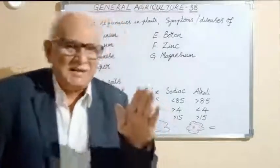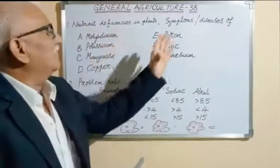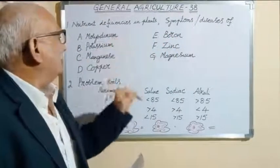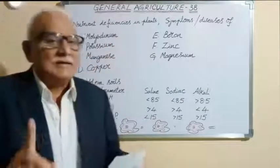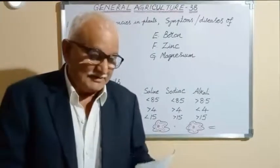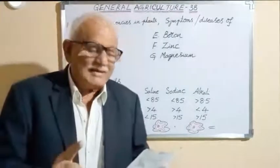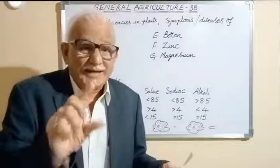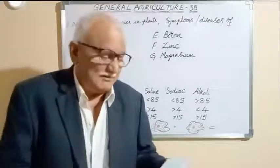These are the main deficiency symptoms or diseases of molybdenum. Next one is potassium. In general, potassium deficiency: dying back tips of shoots is the potassium deficiency.